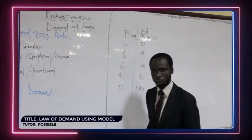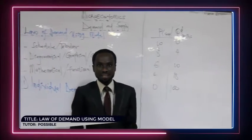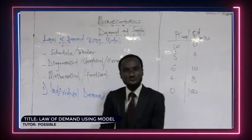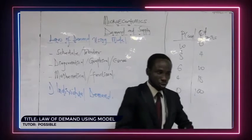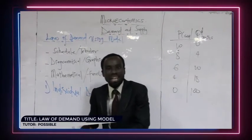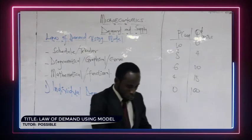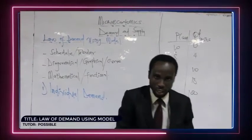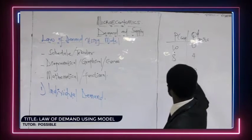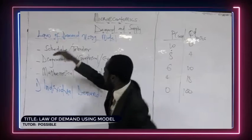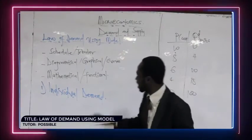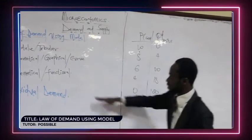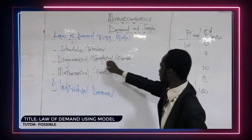Therefore, the demand schedule is a tabular representation of the quantity demanded — the quantity that consumers are willing and able to patronize at a particular price at a given period of time. You take the definition of demand and edit it slightly to reflect the tabular representation. That is the demand schedule.